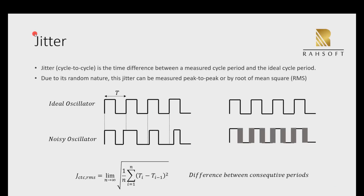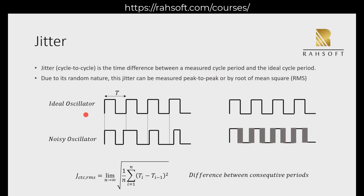So let's talk about jitter first. Jitter is actually — the concept of jitter is similar to phase noise, but generally we analyze jitter in the time domain. It's a time domain phenomenon. So jitter is the time difference between a measured cycle period and the ideal cycle period. We call this cycle-to-cycle jitter, but we have different kinds of jitters.